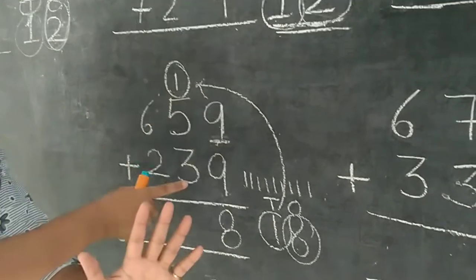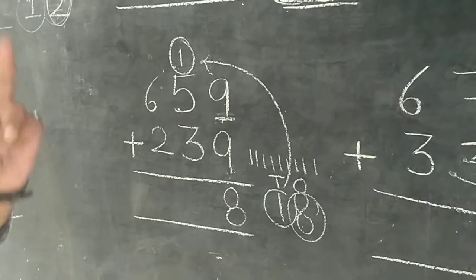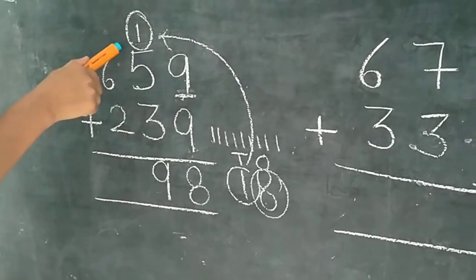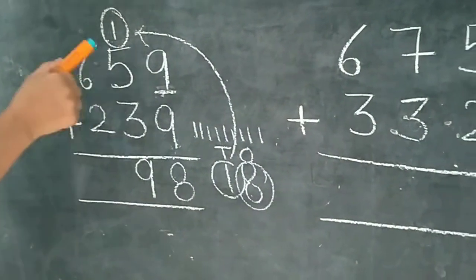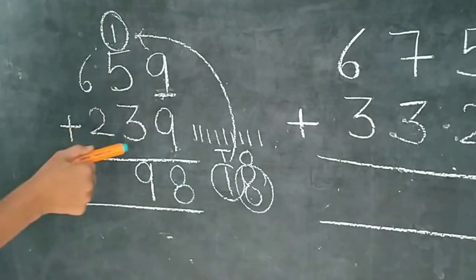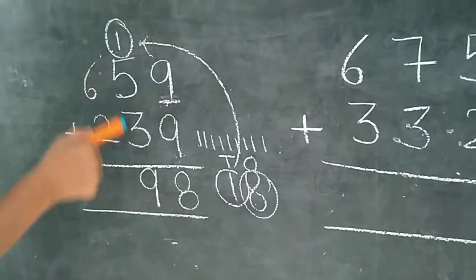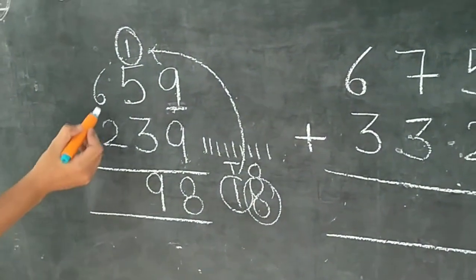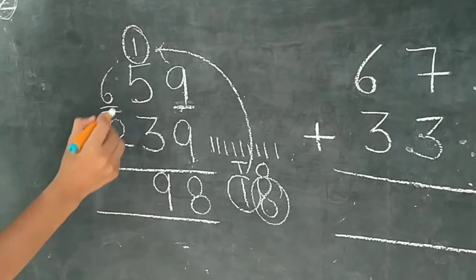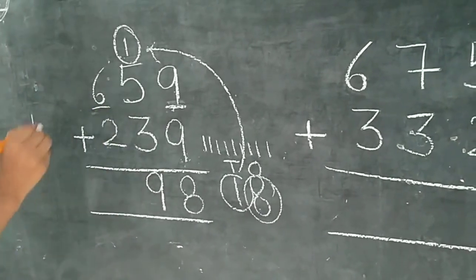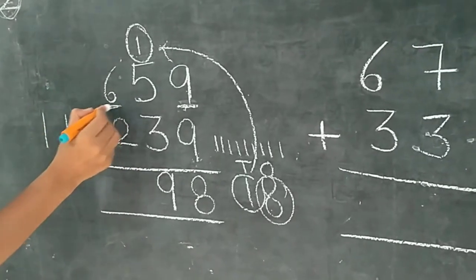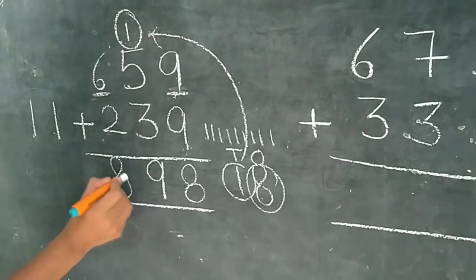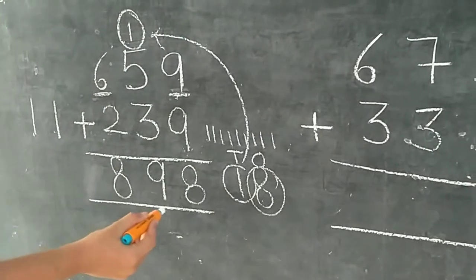After 6, we have to count 3 more: 6, 7, 8, 9. So we write here 9. Pehle humne 1 ko add kiya, 1 mein humne 5 add kiya, 5 ke baad humne 3 add kiya — toh in tino ka total answer 9 aaya. Now 6 plus 2 — after 6, count 2: 6, 7, 8. So we write here 8. The answer is 898.